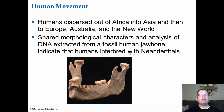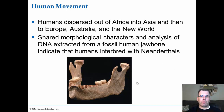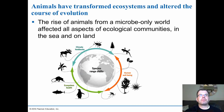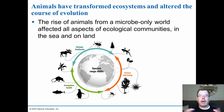DNA extracted from fossil human jawbone indicates humans interbred with Neanderthals. We know that Neanderthals were around at the same time as Homo sapiens, and then the Neanderthals died out and Homo sapiens became the predominant species. The last topic we'll discuss is how humans have transformed ecosystems — we know this all very well regarding the human impact on ecosystems and what is happening.